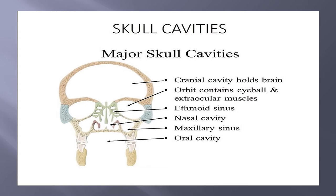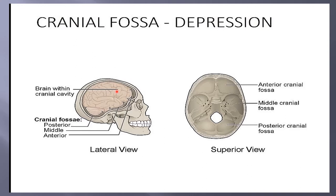Cranial fossa — fossa means depression. The cerebrum makes two depressions anteriorly and in the middle, and posteriorly. In this lateral and superior view, you can see the anterior cranial fossa, middle cranial fossa, and the posterior cranial fossa — three depressions formed by the cerebrum.